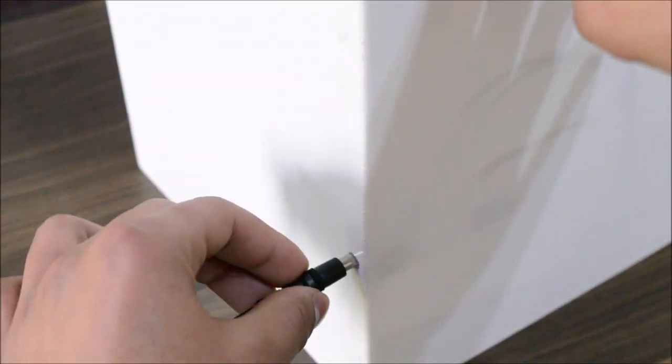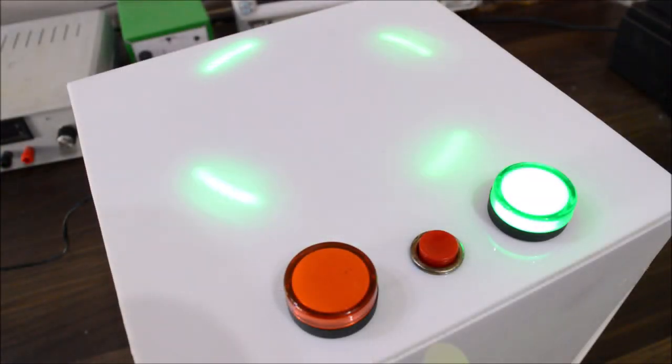But first of all let's see what is this thing. So after connecting a five volt adapter, as you can see, a wheel consisting of four LEDs starts spinning and also the status LED turns on. Now to play the game and win a candy you have to press this red button.